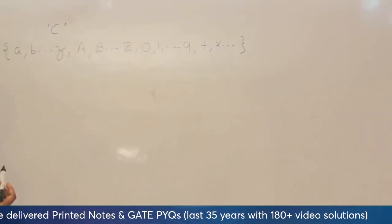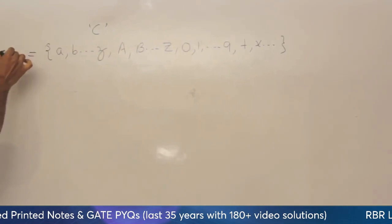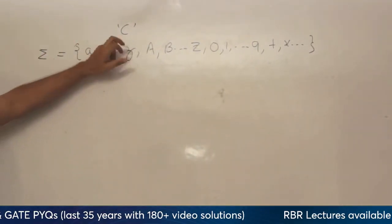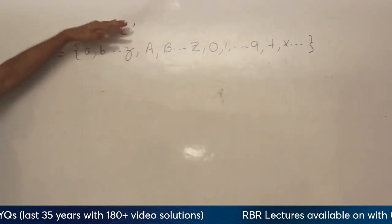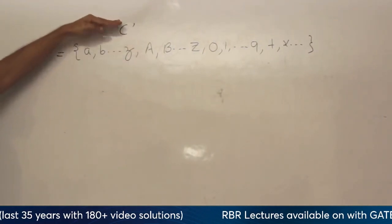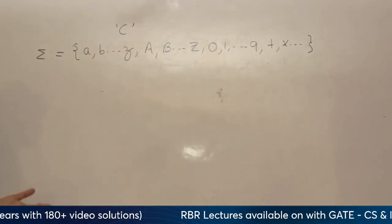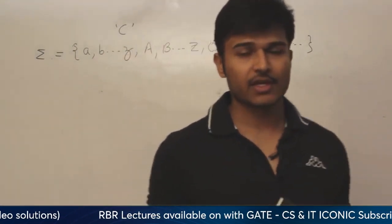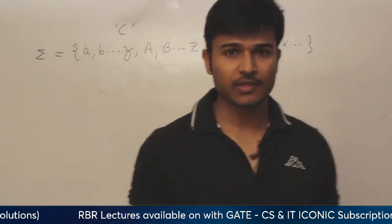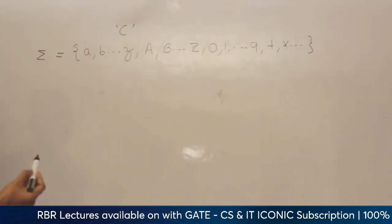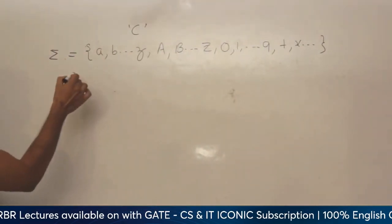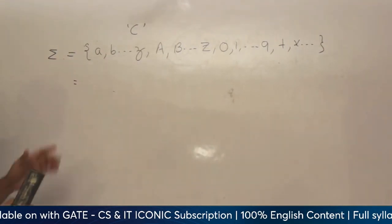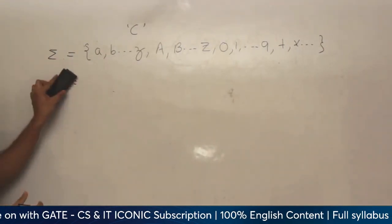And now, you can call this as sigma for the C program. So, the alphabet for any C program is going to be this, which is obviously finite. Always remember, alphabet is going to be finite — it is never going to be infinite. And next, using these symbols, we are going to form a string.